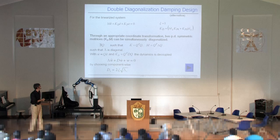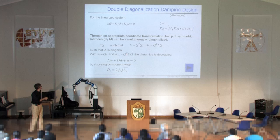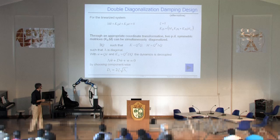By doing a coordinate transformation with this matrix Q and by choosing KD again in this form where D is diagonal, you can easily show that using this KD in the new variables, you have a diagonal system. This is based on modal decoupling, basically.